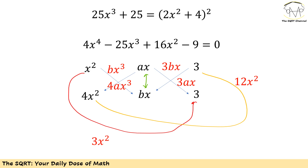Solving this degree-4 equation is not easy. If you focus on it, one option is to use the double cross approach. The double cross approach tries to factor out 4x⁴ and 9 from this equation. For 4x⁴ one approach is to use x² and 4x², and for 9 one possible option is to use 3 and 3.